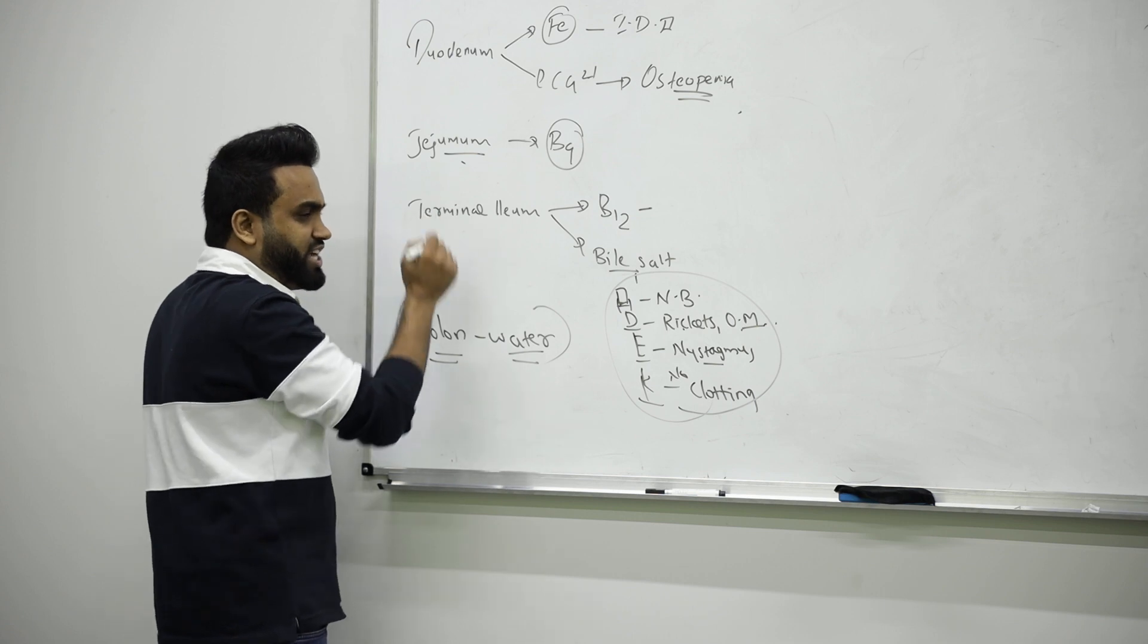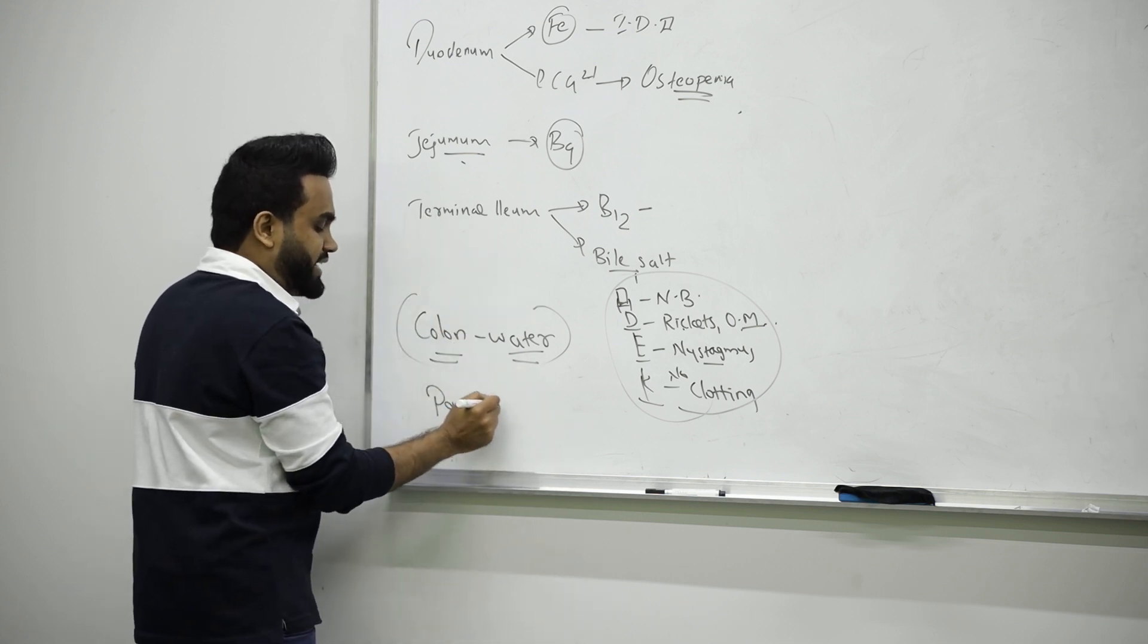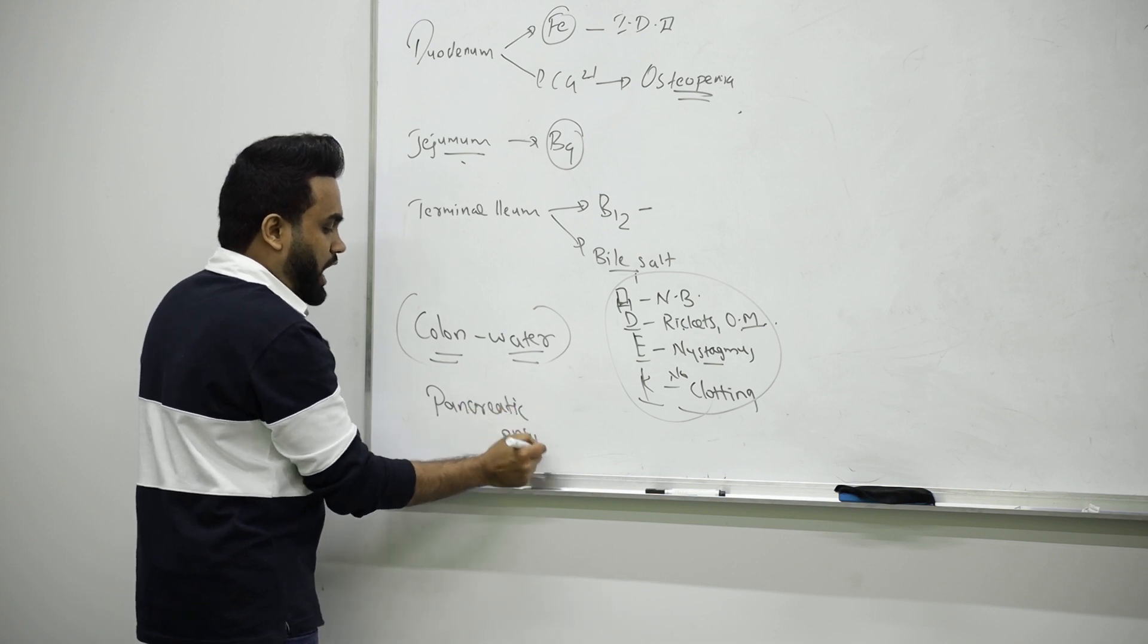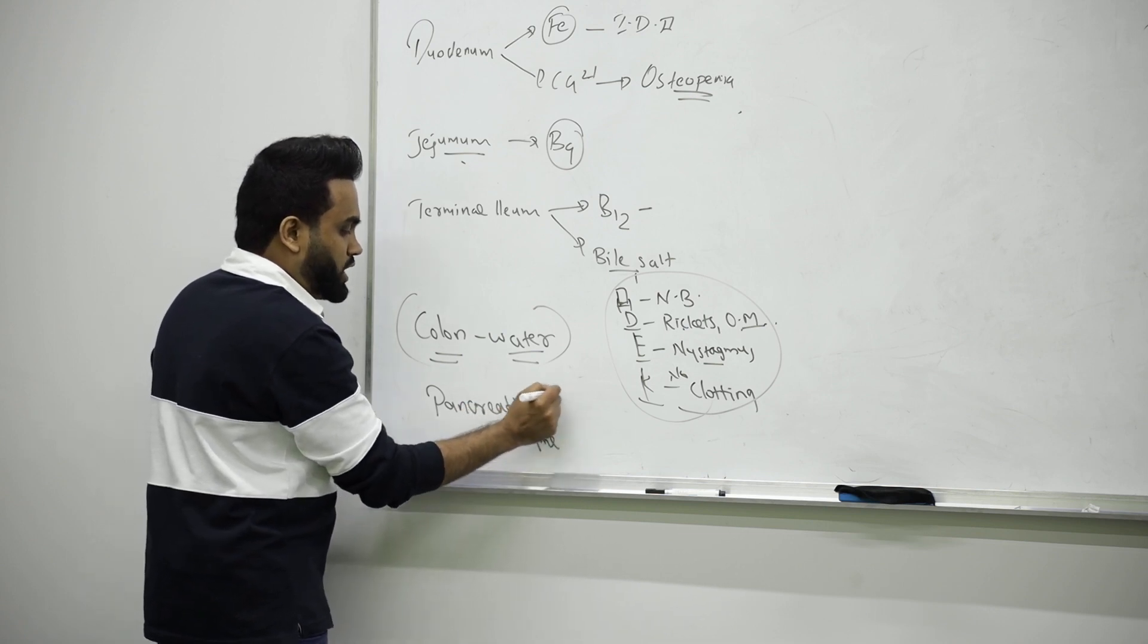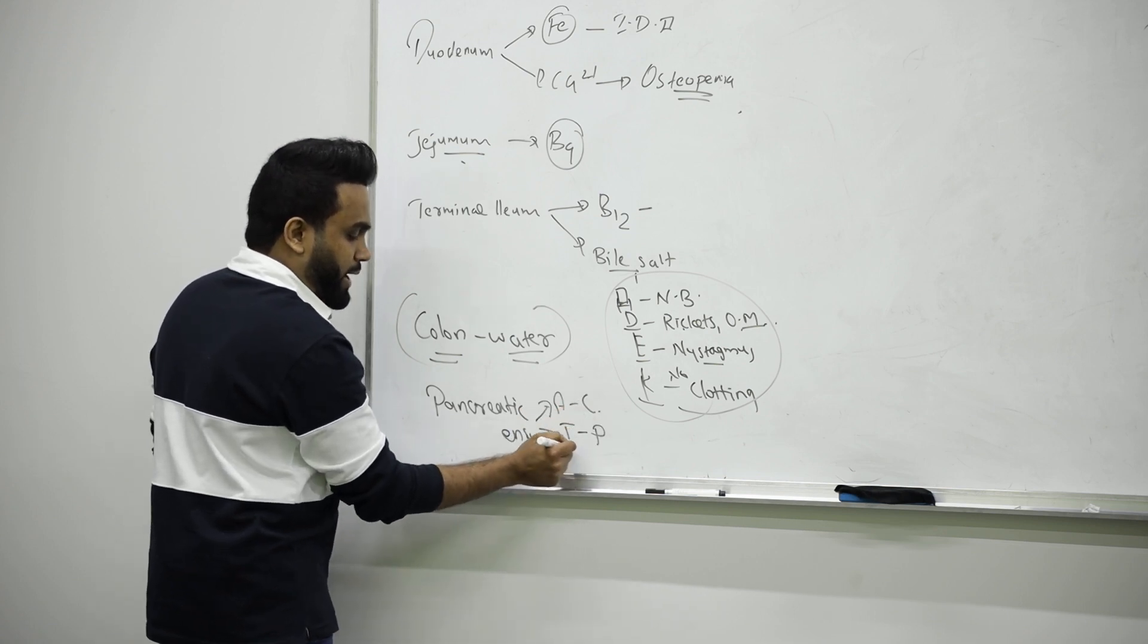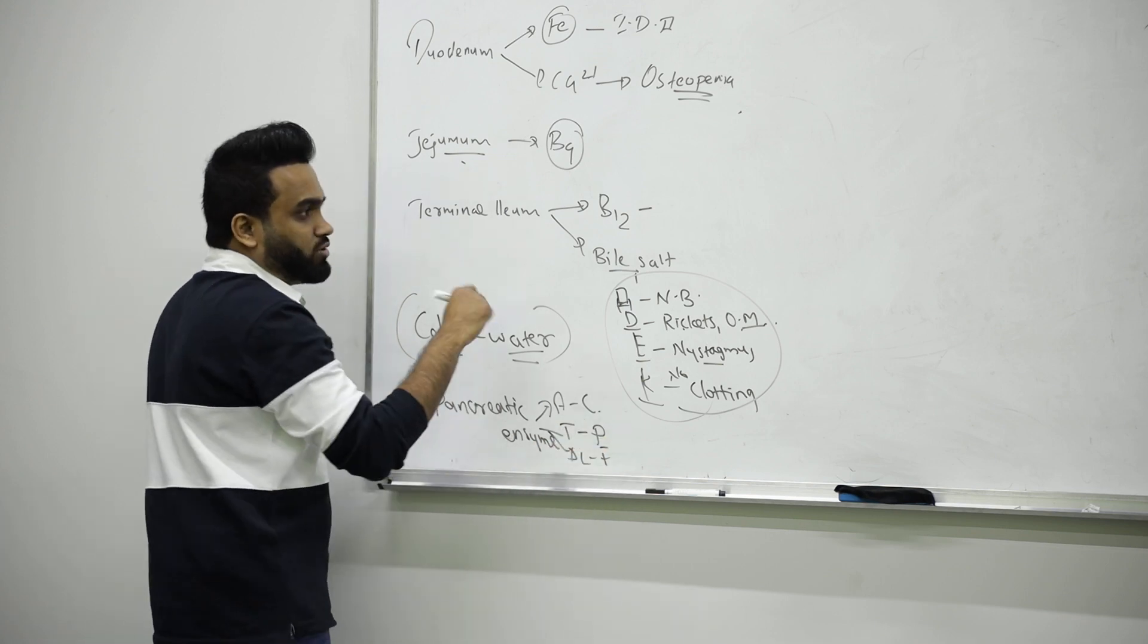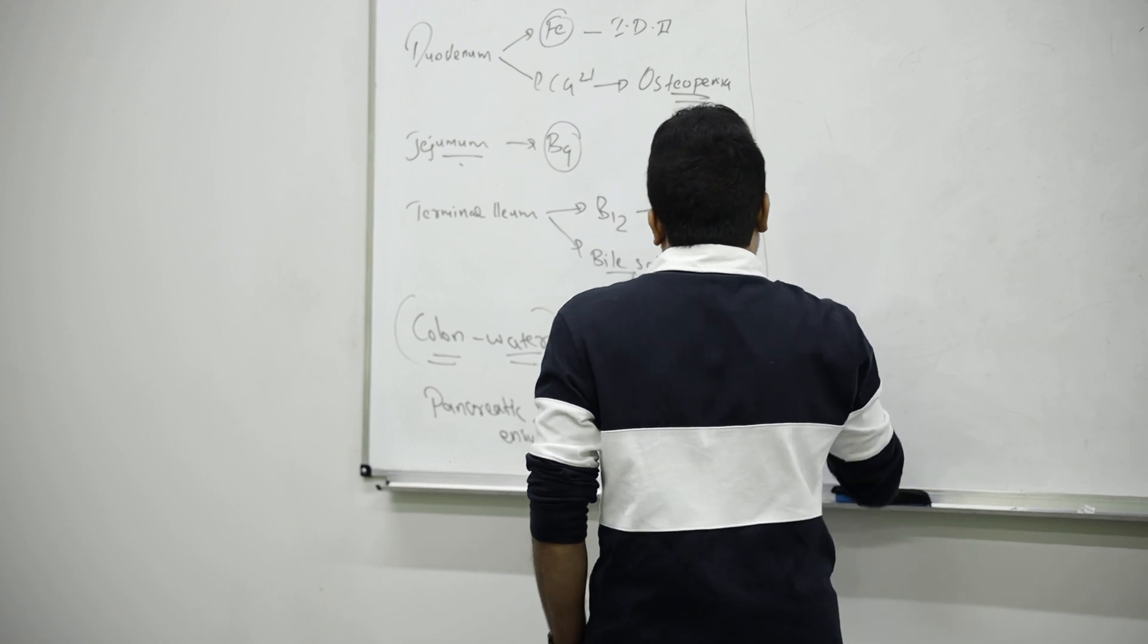The main organ in our GIT tract, digestive tract, is pancreas. They will have the pancreatic enzymes like amylase for carbohydrate digestion, trypsin for protein, and pancreatic lipase for fat. This is how the digestion works, everyone knows.